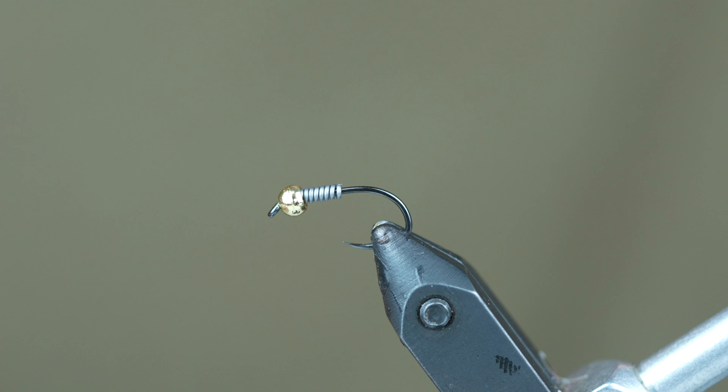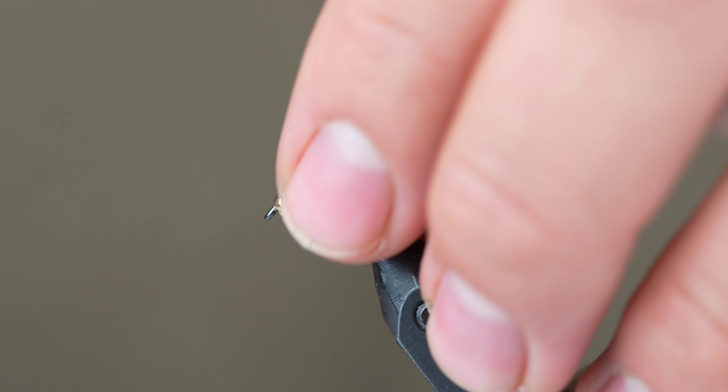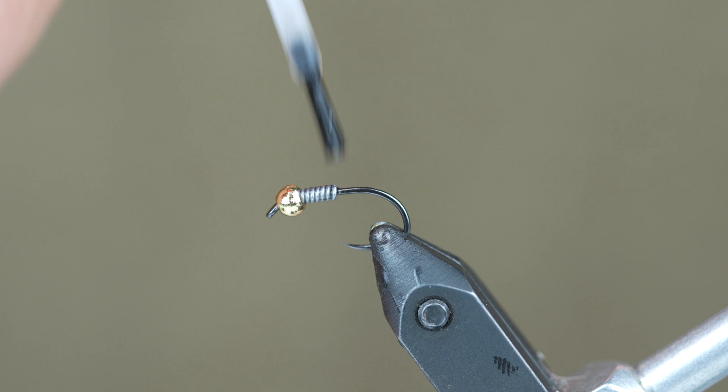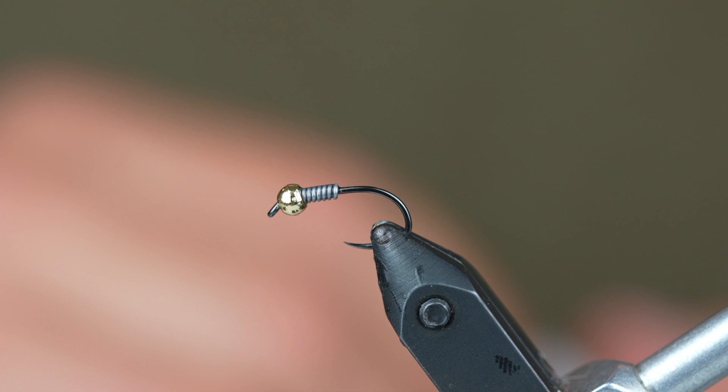We're going to put about five or six wraps on there right behind the bead head, and then we're going to slide it back down the hook shank a little bit. Put a touch of super glue right in front of it and slide it back up. Put a little bit of super glue over those wraps just to help seal it all up. Helps keep the thread from having to go down and make a bunch of wraps through the wire as well.